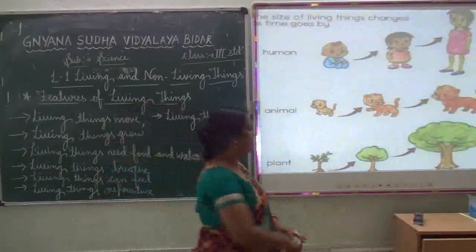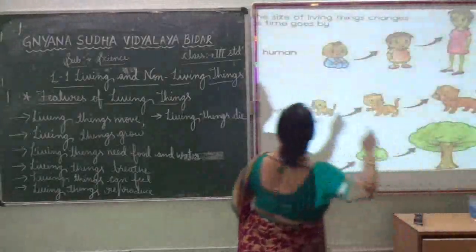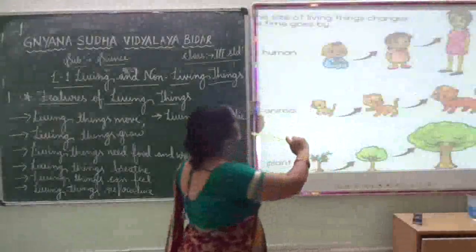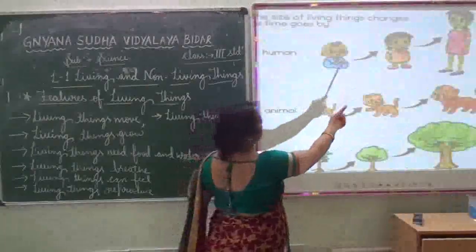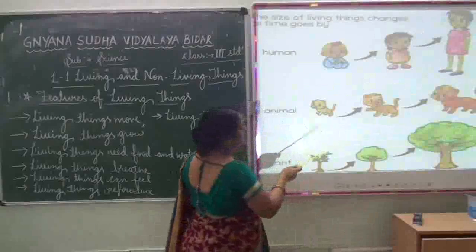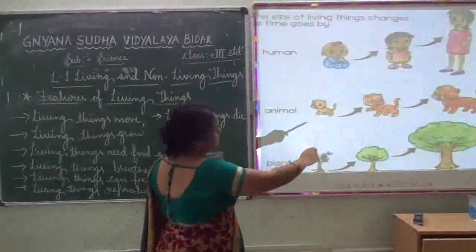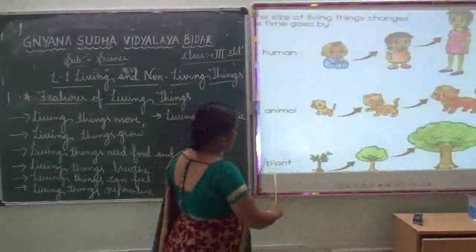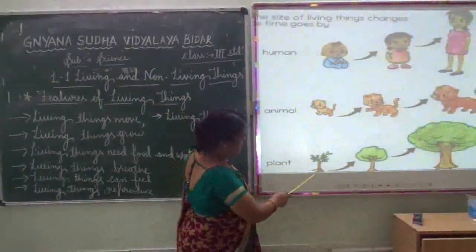Here are some pictures. See — here is a human being: baby, child. And here are animals — how they are growing step by step. Here plants are also shown.